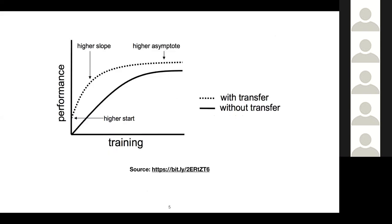What this looks like graphically is a cartoon of performance against training. The higher start corresponds to having good initialization — you're starting in a better place in the loss space, so you have better performance from the beginning. The higher slope comes from reduced training time, meaning you converge to your solution quicker. And the higher asymptote corresponds to increased accuracy — the hope that transfer learning increases your final results. These are the aims of what we would get out of employing transfer learning.